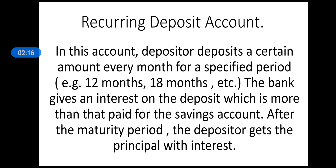The next one is recurring deposit account. In this account, the depositor deposits a certain amount every month for a specified period, for example 12 months, 18 months, etc. The bank gives an interest on the deposit which is more than that paid for the saving account. After the maturity period, the depositor gets the principal with interest. A recurring deposit is a special kind of term deposit offered by banks which helps people with regular incomes to deposit a fixed amount every month and earn interest at the rate applicable to fixed deposits.